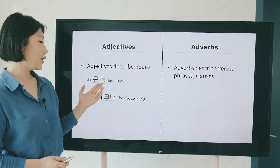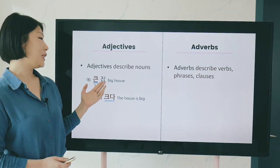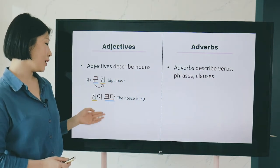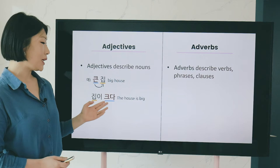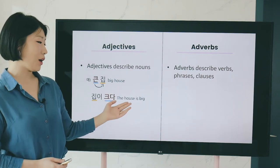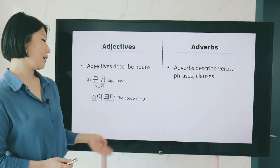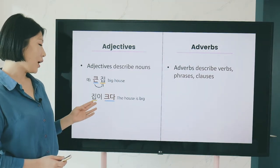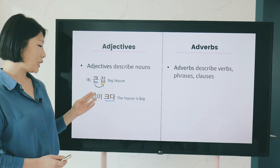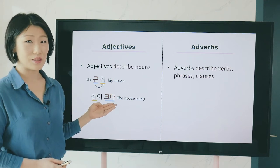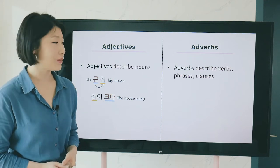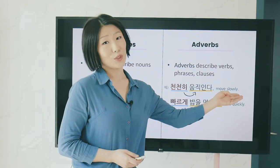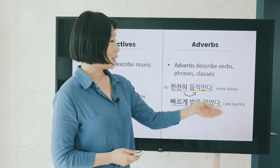For example, 큰 집 means 'big house' — here 큰 (big) describes 집 (house) just before the noun. And 집이 크다 means 'the house is big,' where 크다 describes 집 at the end of the sentence like a verb.